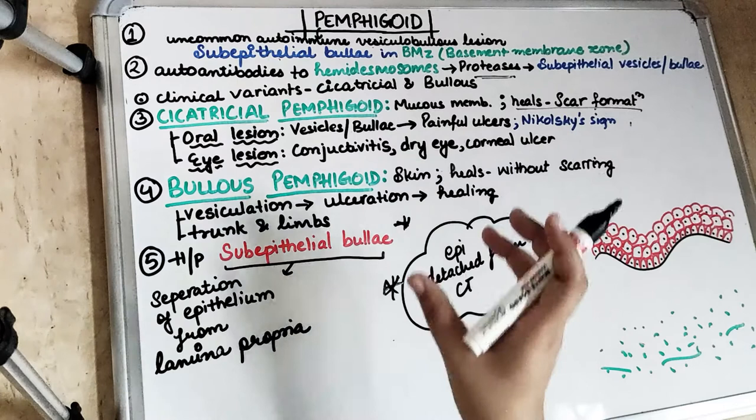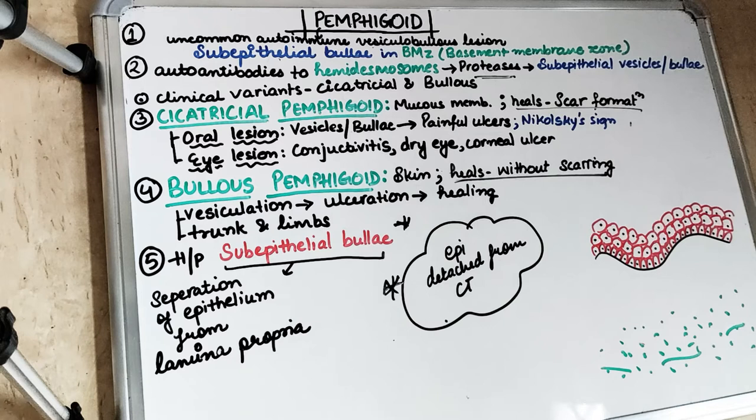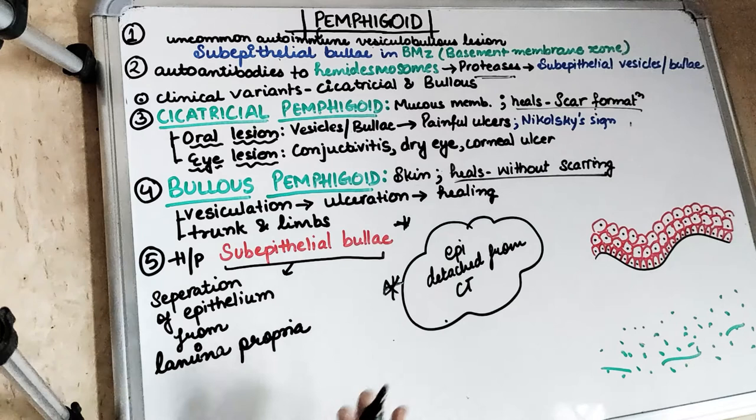Skin lesions are very rare in cicatricial pemphigoid. Bullous pemphigoid involves the skin and heals without scarring — no scar is formed on the skin. Initially there is vesiculation, then the vesicles rupture to form ulcers, and finally healing occurs without scar formation. The skin lesions occur across the trunk and the limbs, initially presenting as red erythematous plaques which then form bullae and rupture to form ulcers.